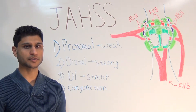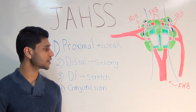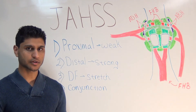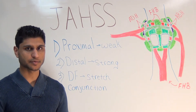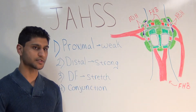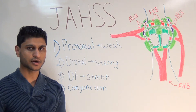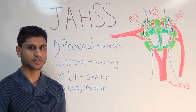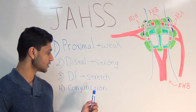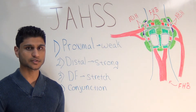The plantar plate has a loose attachment to the metatarsal head, which allows for plantar flexion and dorsal flexion, and has a strong attachment to the base of the proximal phalanx. As the hallux dorsal flexes, the plantar plate is stretched, and that draws the sesamoids forward. In a normal person, that is about one centimeter. The sesamoids move in conjunction with the proximal phalanx.